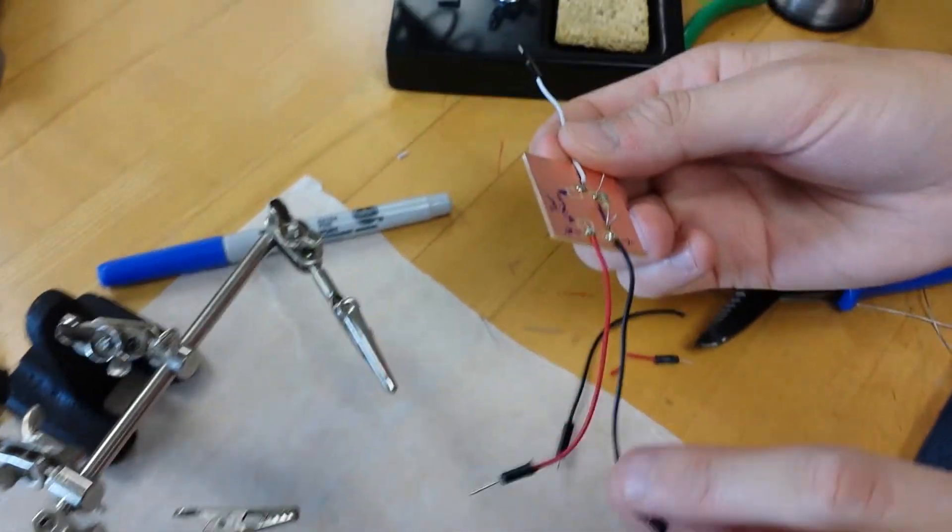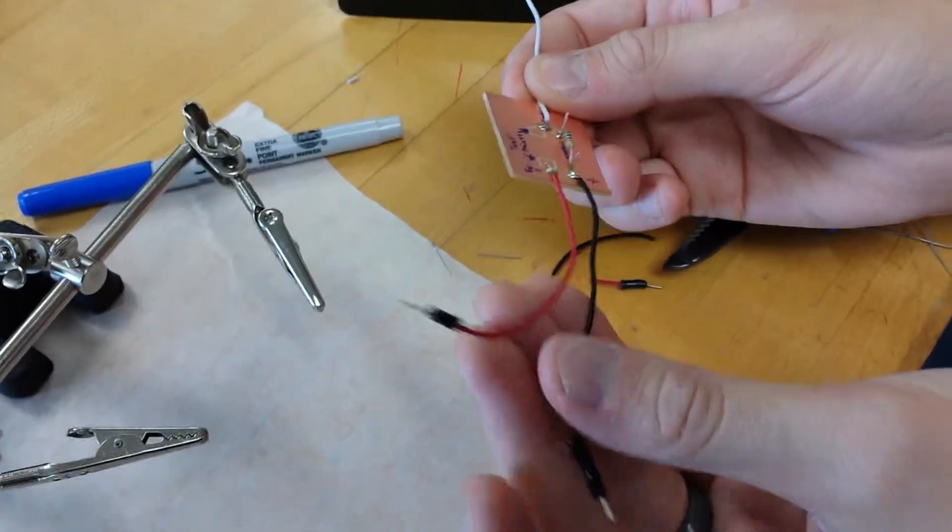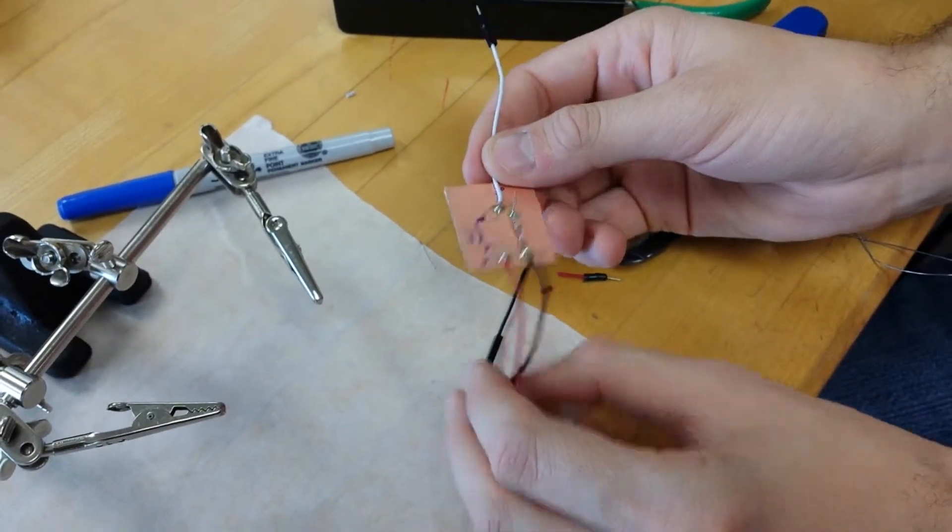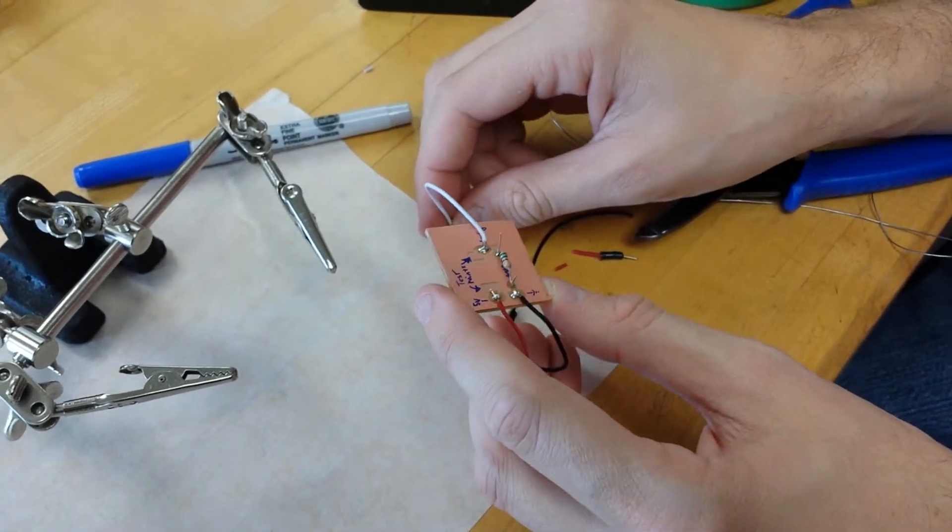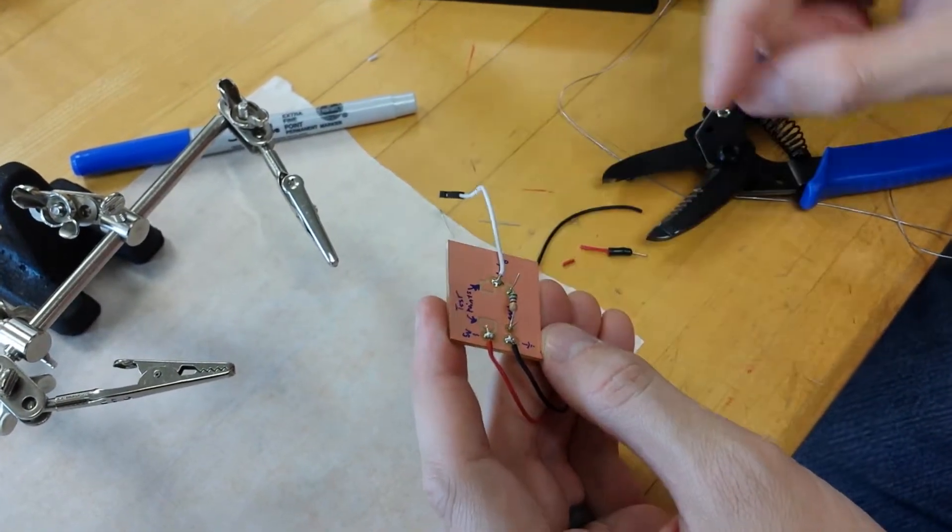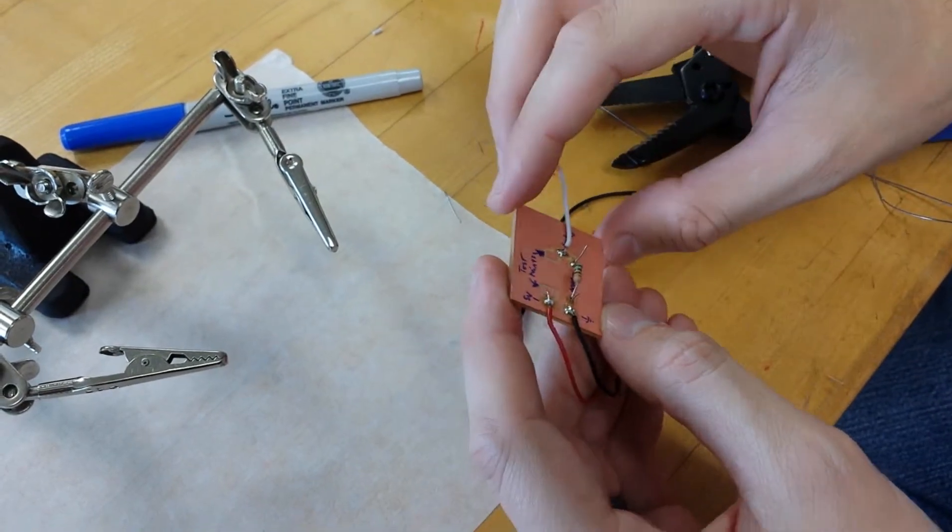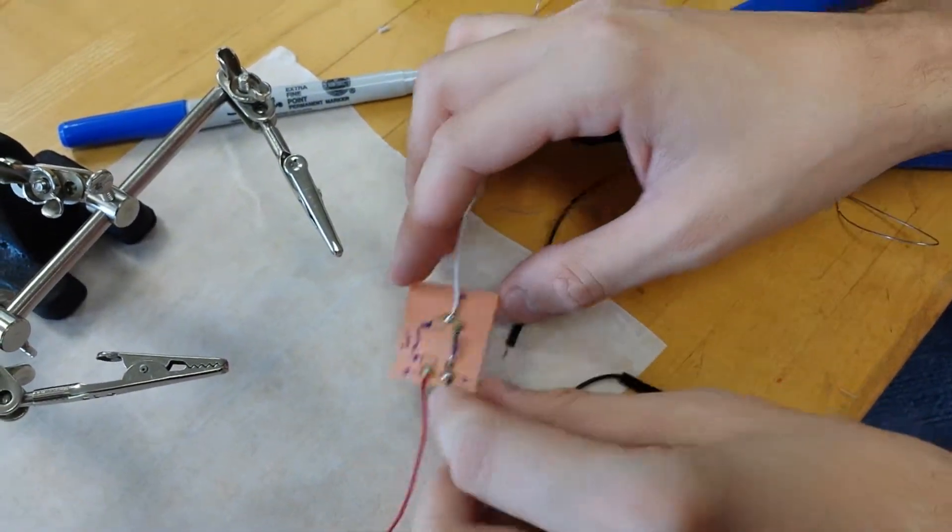So now at this point you have your 5 volts and your ground you can plug into your Arduino. You have your analog input you plug into your analog input. And these square pads is where you're going to put your unknown resistance. And you're going to touch it to it.